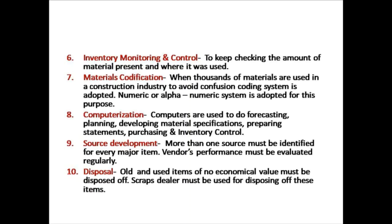The seventh function is materials codification. When thousands of materials are used in construction, a coding system is kept in place using numeric or alphanumeric codes. For example, if someone says material number 23 is missing, the person can look it up and understand it is a specific type of cement. There may be 10 different types of cement in the company, so codification makes it easier to identify which one is missing and why.